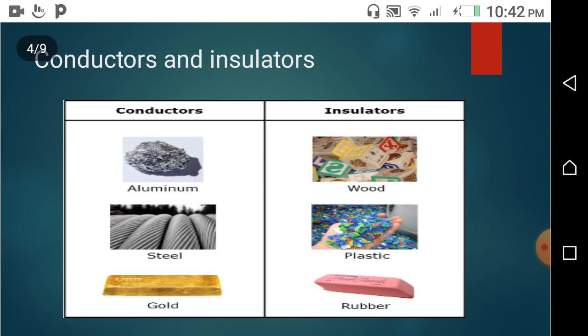What are conductors and insulators? Electrical conductors allow electricity to pass through them. Electrical insulators do not allow electricity to pass through them.